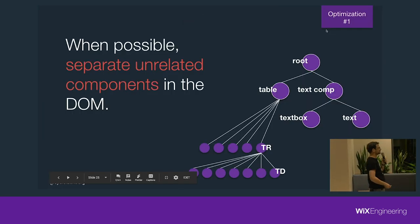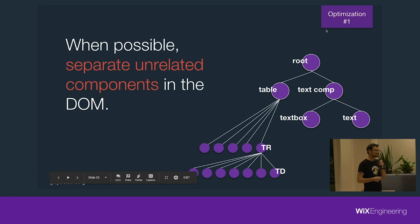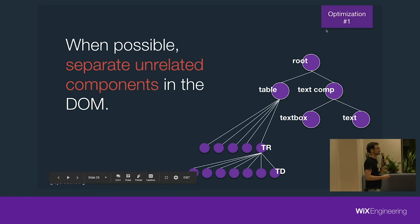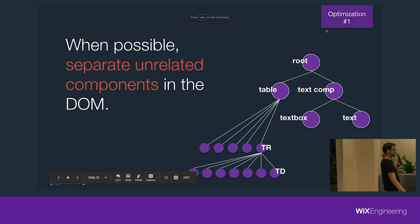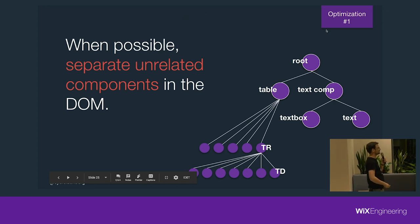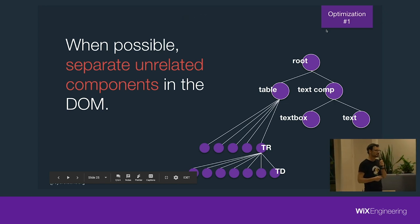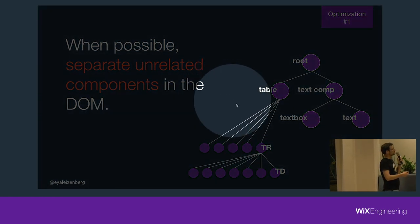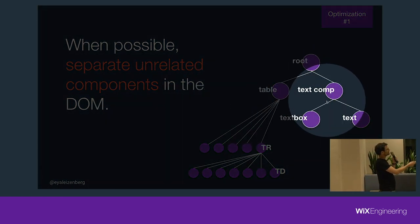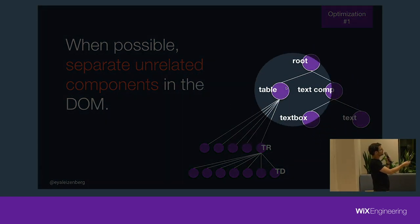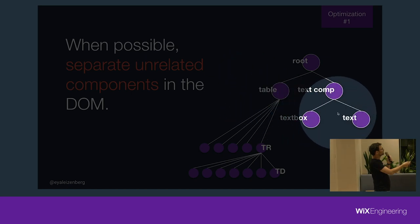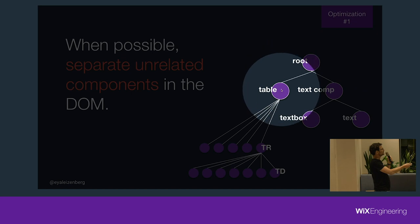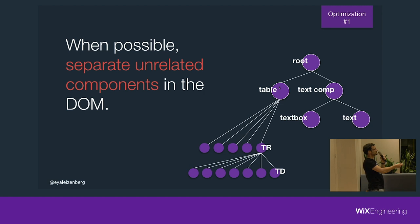So this was the crucial mistake here, but it was just a simple way to have a stress test to show what can happen in more complex applications. This is the right solution — we want to separate the text components completely from the table. Text changes will just affect the text box and the text, and they won't affect the table at all. This will probably render the best performance for sure.